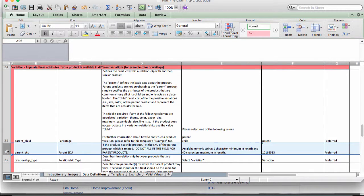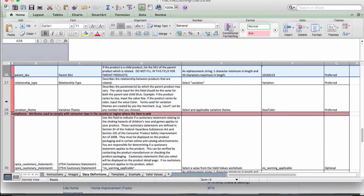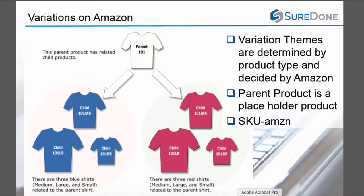The parent products have their own SKU, assigned by Amazon — you do not need to add these yourself. The last row of the variations section describes which aspects of the product are valid variations; in this case, only size and color. To summarize: variation themes are determined by product type and decided by Amazon in advance; parent products are placeholder products. The system creates the parent SKU by taking the product SKU — in our t-shirt example, 101 — and adding a dash followed by the word Amazon or AMZN.